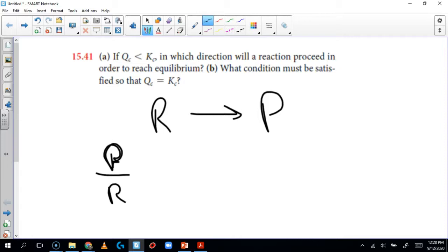So if Q is less than K, actually, the funny thing is that the question asks what condition must be satisfied so that Q equals K. That means the reaction has to be at equilibrium. The condition that must be satisfied is that the reaction must be at equilibrium. So we have to answer question B before we answer question A. In order to get this at equilibrium, if Q is less than K, that means Q has to increase, right?